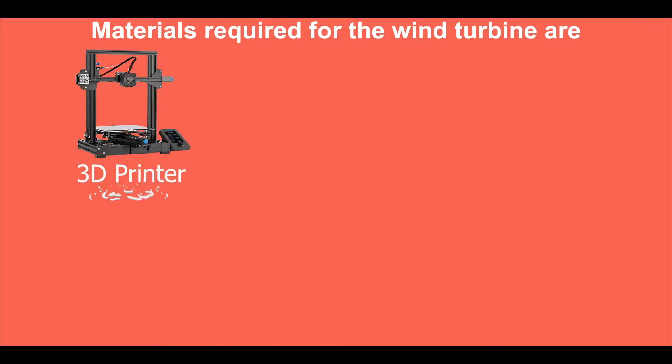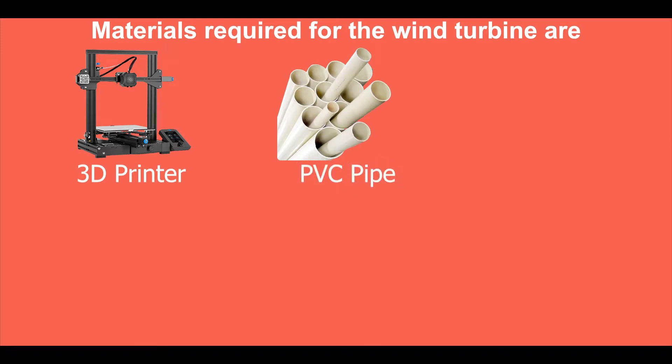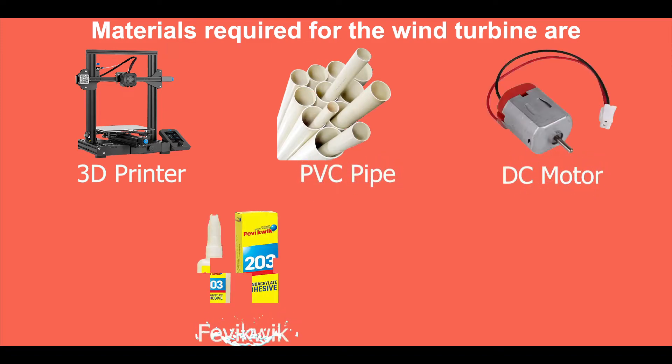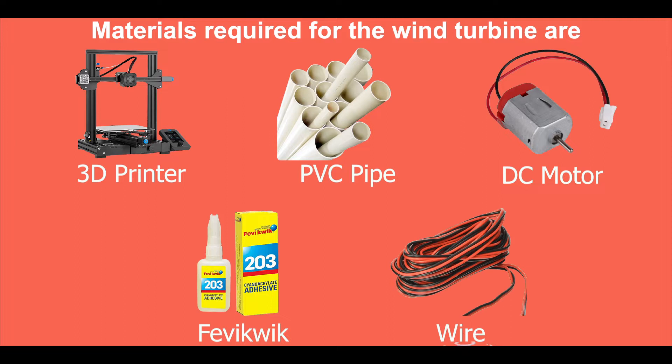The materials required for the wind turbine are 3D printer, PVC pipe, DC motor, Fevic Quick and wire.